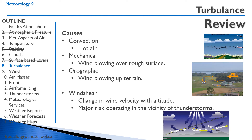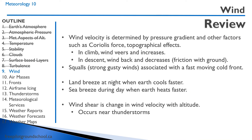Turbulence is caused by convection such as hot air rising, mechanical turbulence from wind blowing over a rough surface, or orographic wind blowing up over terrain. Wind shear is the change of wind velocity with altitude, and it's a major risk when operating in the vicinity of thunderstorms — it can mean increasing or decreasing performance. Wind velocity is determined by the pressure gradient and other factors such as Coriolis force and topographical effects. In a climb, the wind tends to veer and increase in speed; in a descent, the wind tends to back and decrease in speed due to friction with the ground.